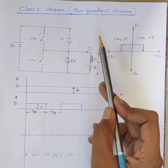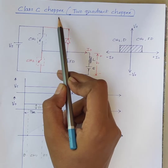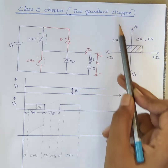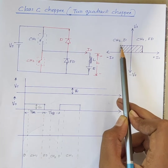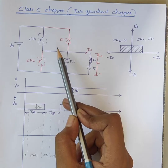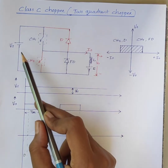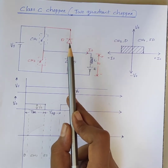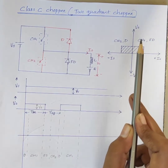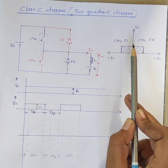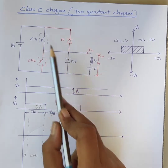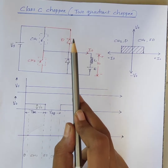Hello students, today's topic of discussion is Class C chopper. Class C chopper is also known as two-quadrant chopper. It can operate in the first as well as the second quadrant, meaning the power can either flow from source to load or load to source. We know that Class A chopper operates in the first quadrant and Class B chopper operates in the second quadrant. Therefore, Class C chopper is obtained by the parallel connection of Class A and Class B chopper.